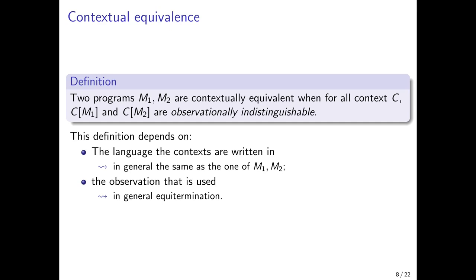Before going into more details, let me recall the definition of contextual equivalence, also called observational equivalence. This notion is central in this work — it is what we capture when designing fully abstract models and sound and complete operational techniques. We say that two programs M1 and M2 are contextually equivalent if for all contexts C, putting M1 in the hole of C and M2 in the hole of C gives two terms that are observationally equal. There are two degrees of freedom: the language in which contexts are written, and using effects like call-CC and references, the context can discriminate more programs — meaning fewer programs are contextually equivalent.